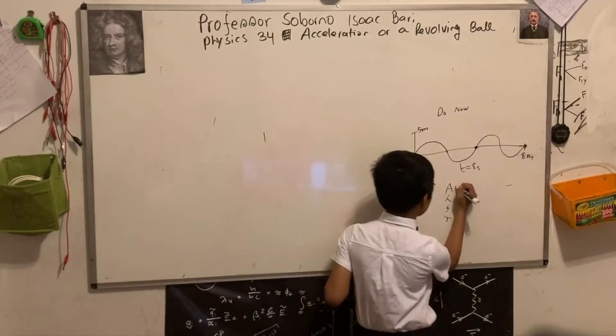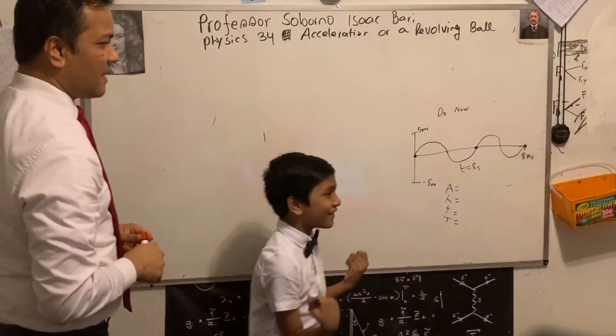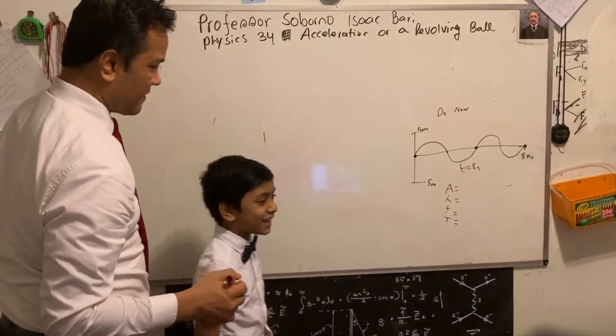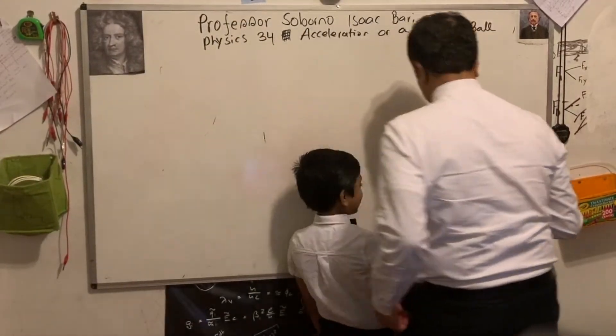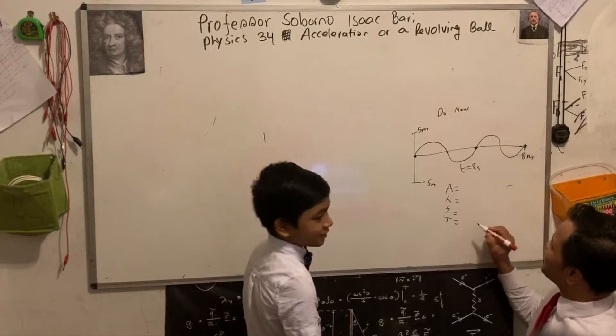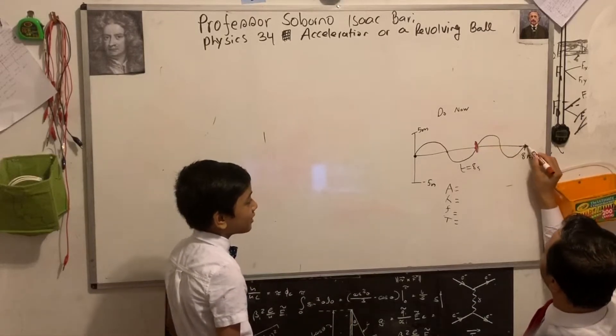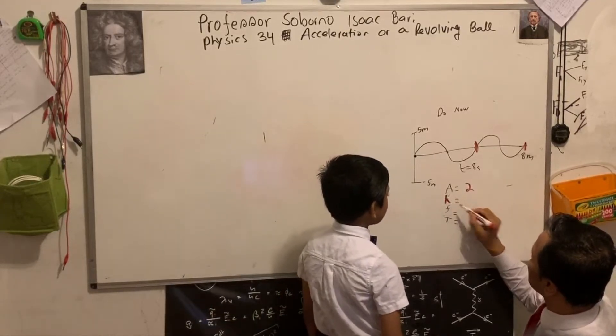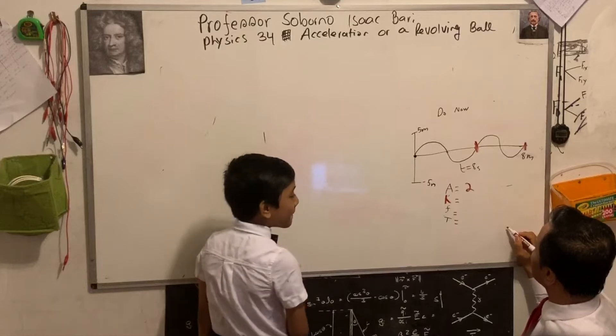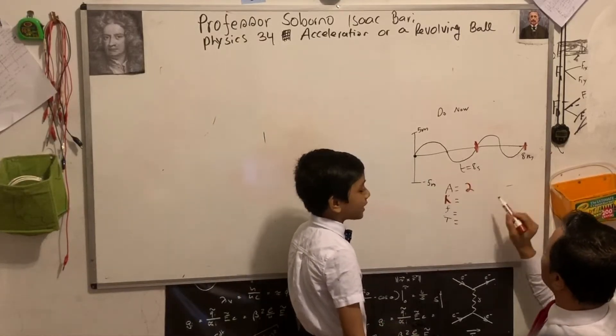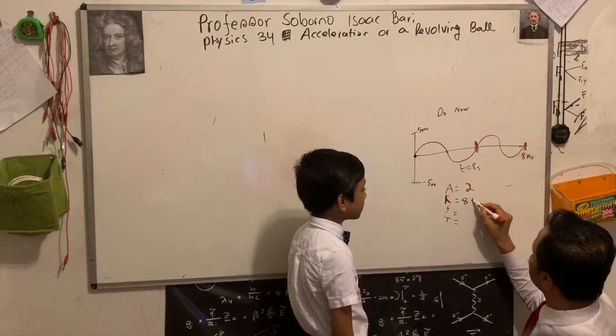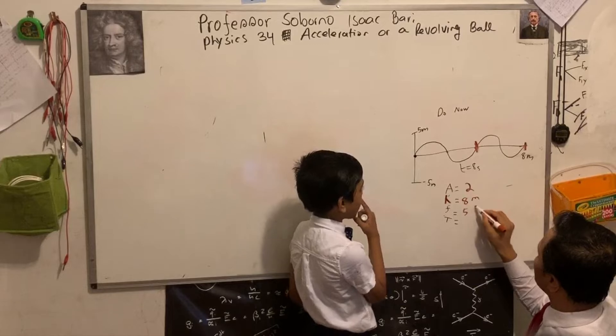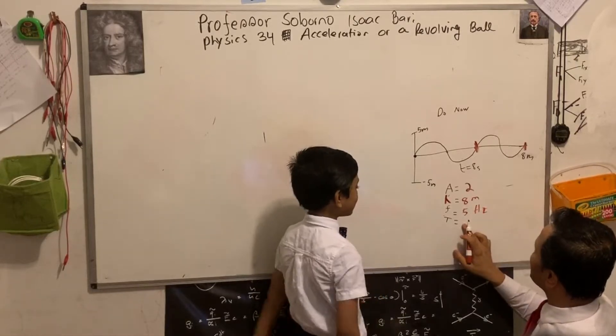Do you want me to try, Professor? Can I try? Okay. Amplitude is one and two. Is this lambda? Lambda. You mean wavelength. Oh, wavelength eight meters. Frequency: one, two, three, four, five hertz. And period is one over five seconds.